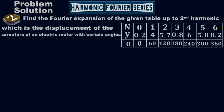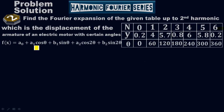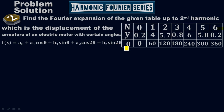The equation for the second harmonic Fourier series is f(x) = a₀ + a₁·cos(θ) + b₁·sin(θ) + a₂·cos(2θ) + b₂·sin(2θ).